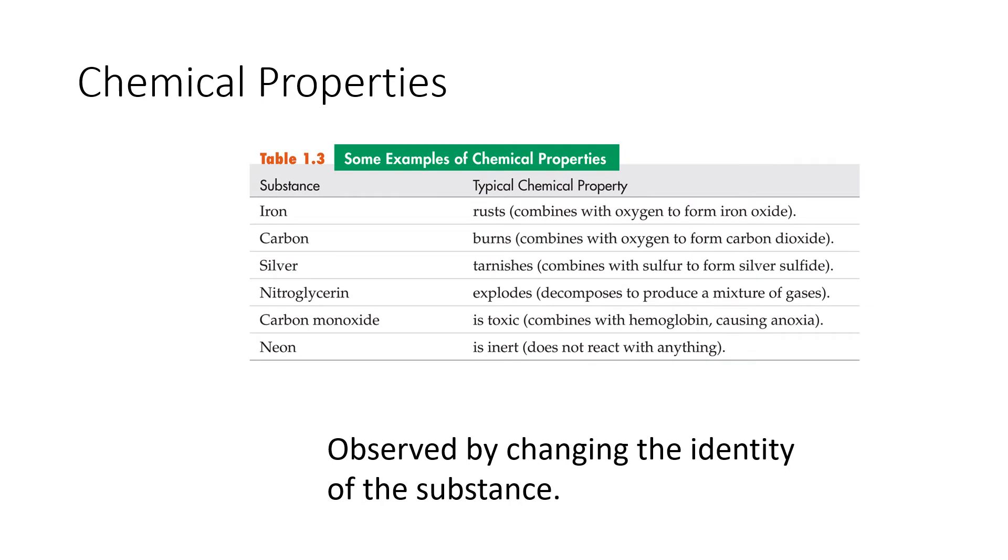Chemical properties are things that we observe as we change the identity of the substance. So for instance, something like rusting, where we change iron into iron oxide. Iron is a hard strong metal, iron oxide or rust is this kind of orangish, really flaky, not strong stuff. So anytime we're changing the identity of a substance, we're observing a chemical property in the process of a chemical change.